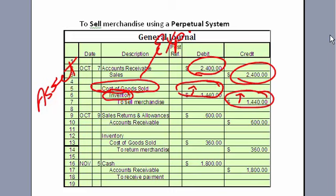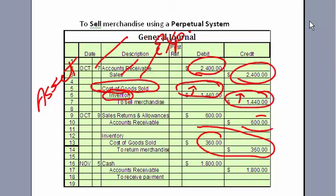At the same point in time that we record giving up the inventory, under a perpetual system you have to have two journal entries — you also record accounts receivable and sales. Under this system, if people return merchandise to us, we have to reverse our inventory and cost of goods sold: debit inventory, credit cost of goods sold, and also back off accounts receivable.